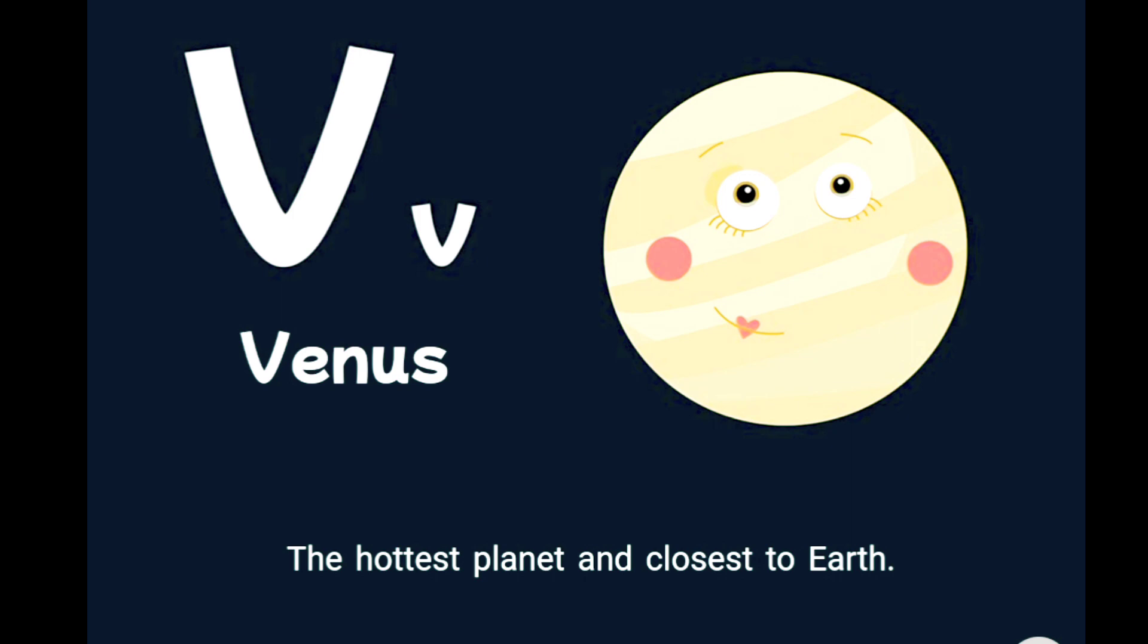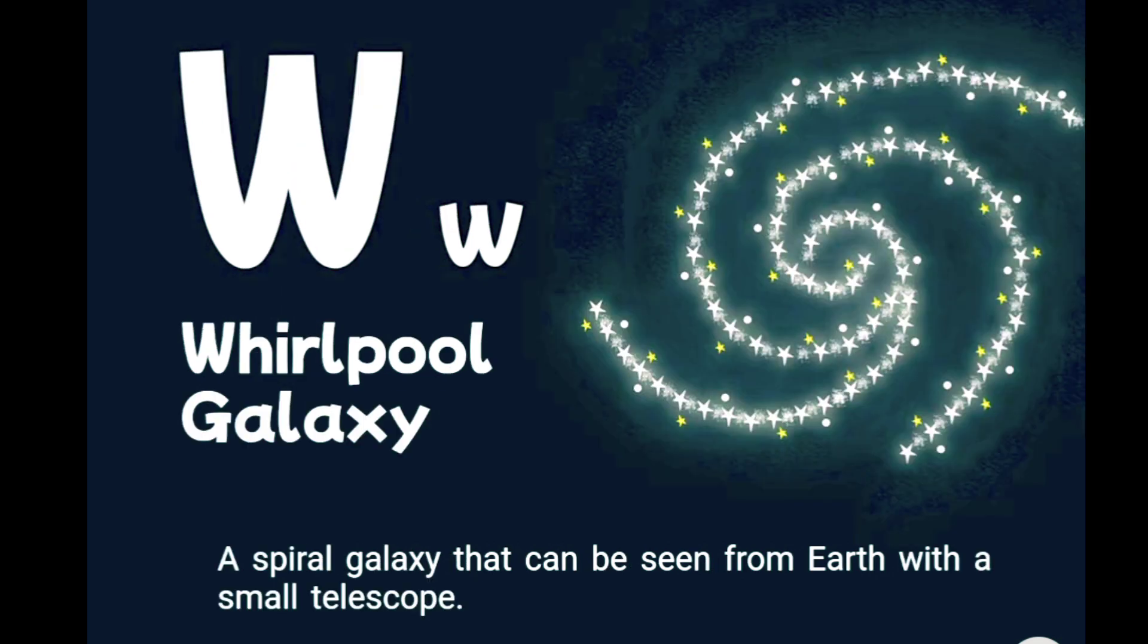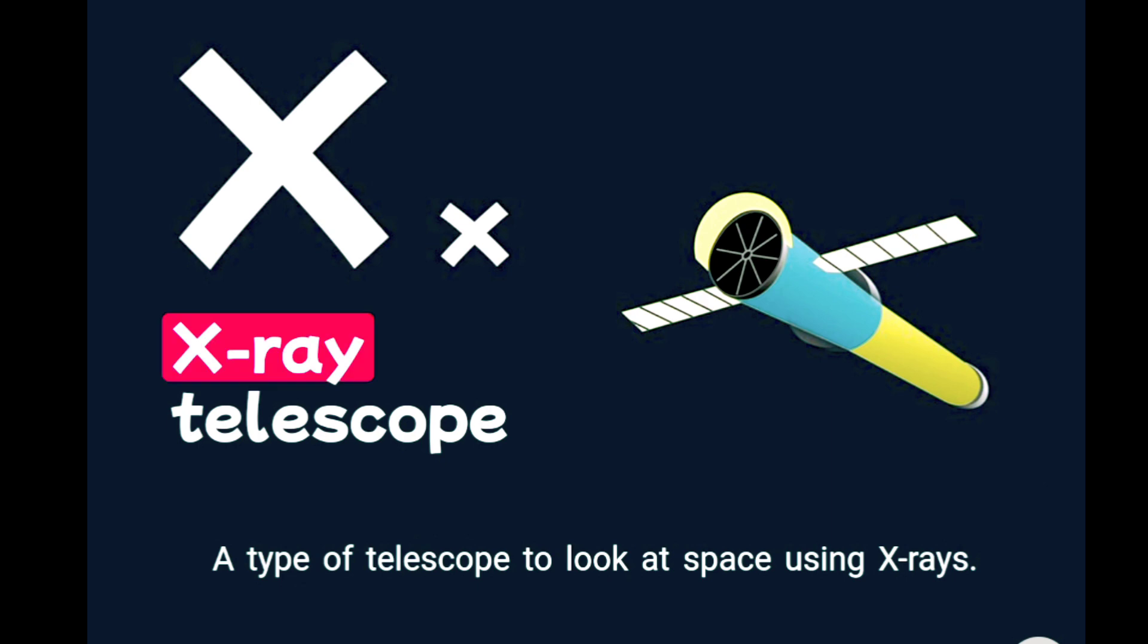W is for whirlpool galaxy, a spiral galaxy that can be seen from Earth with a small telescope. X is for x-ray telescope, a type of telescope to look at space using x-rays.